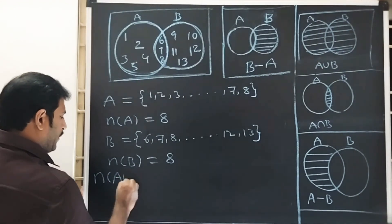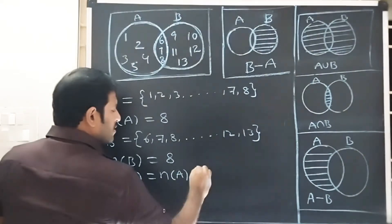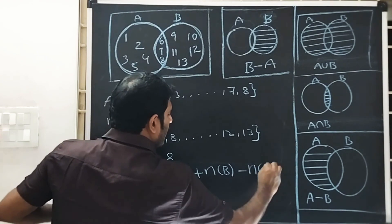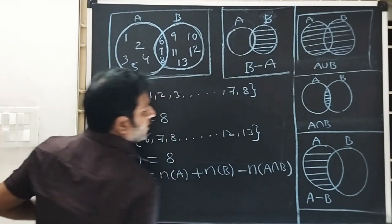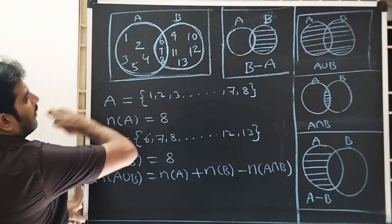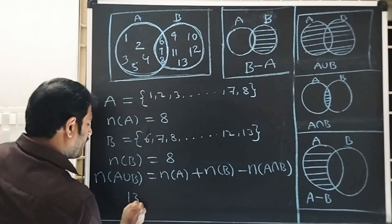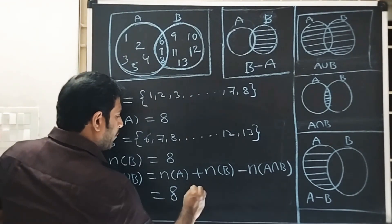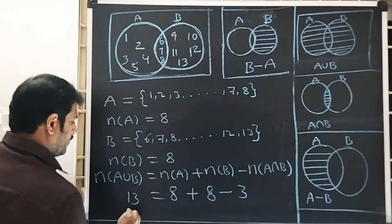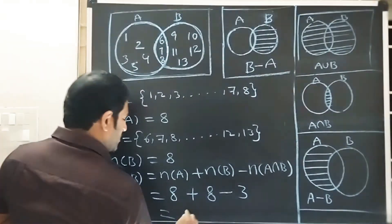N of A union B is equal to N of A plus N of B minus N of A intersection B. The total number of elements is 13. N of A is 8, N of B is 8, minus 3. So 13 is equal to 8 plus 8 equals 16, minus 3 equals 13.